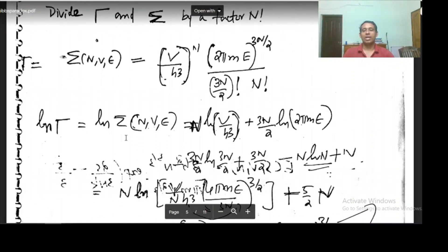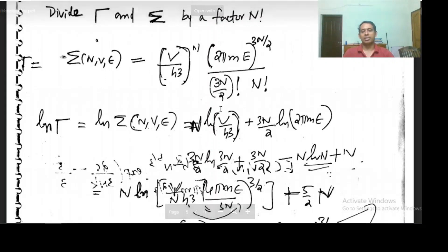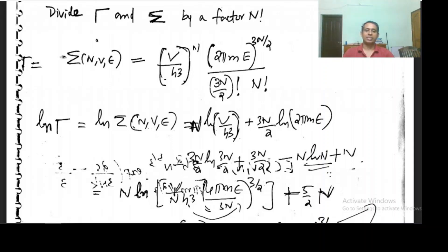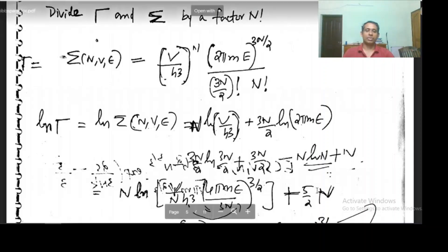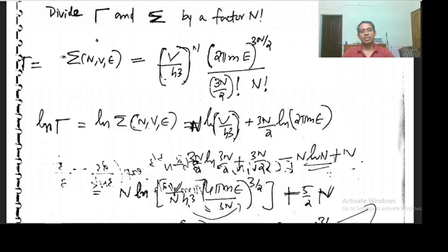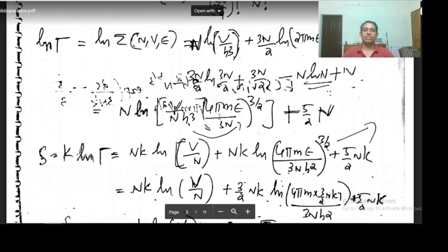As we take log gamma, which is equal to log sigma, this will be as usual: n log(v/h³), and 3n/2 log(2πme). We apply Stirling's approximation, so log(3n/2)! will be (3n/2)log(3n/2) minus 3n/2, and log(n!) will be n log n minus n, and we apply the negative sign.